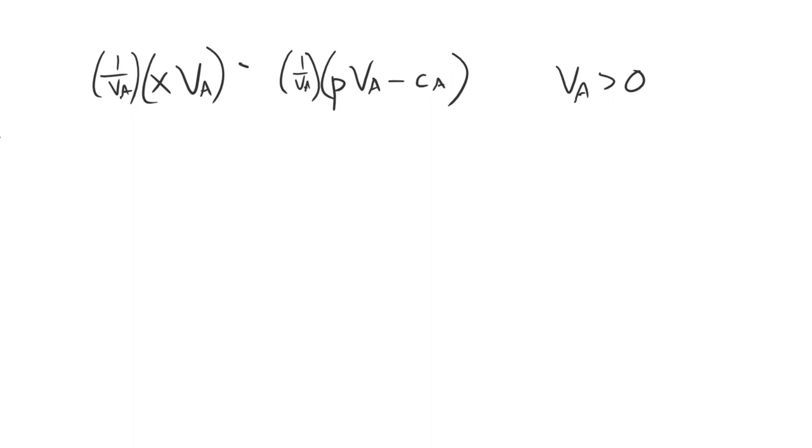Imagine that you were trying to compare the payoff for peace versus the payoff for war. Well, if X times VA is larger than P times VA minus CA, then that inequality is still going to hold true once we've multiplied both sides by the same quantity. It's not changing the ordering of those things, it's just changing the magnitude of it, whether we're multiplying everything by 2 or 5 or 20. So what that means is that if we have, instead of these payoffs up here, we go ahead and multiply through everything, we could represent just as easily the payoff for a peaceful settlement as X and the payoff for war as P minus CA divided by VA.